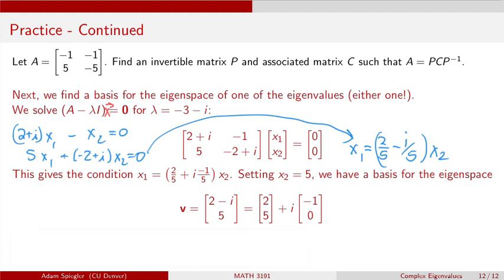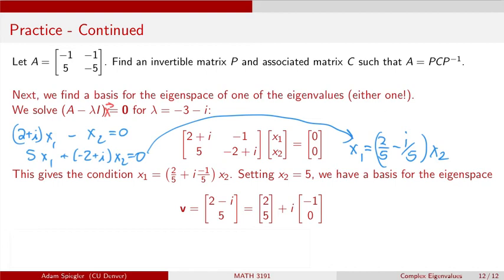To get a nicer basis without fractions, we can set the free variable x2 equal to 5. Doing that gives us a basis for the eigenspace: the vector with entries 2 minus i on top and 5 on the bottom — we're just canceling the 5s when x2 equals 5. We can take this complex vector and write it as its real part, the vector 2, 5, plus i times its imaginary part, the vector minus 1, 0.